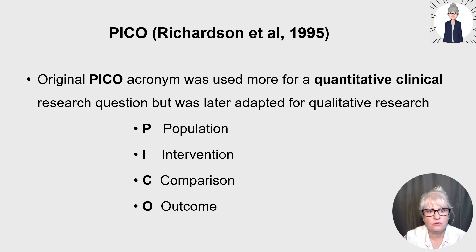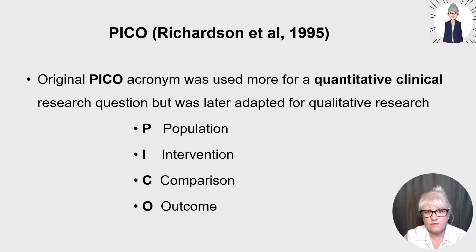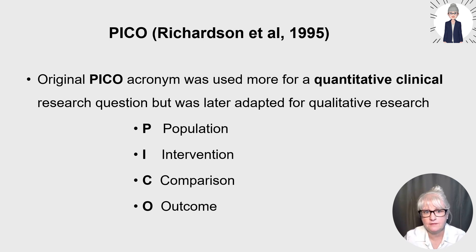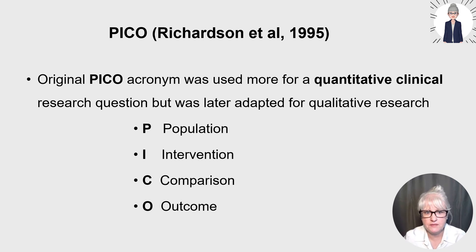P for population types links to types of patients, potentially the patient's condition, key characteristics, their age, gender or ethnicity. I for intervention — here we're thinking about what intervention, exposure or test are you doing; did the patients receive medication, radiation, surgery or counselling? C for comparison — is there a control group who receive no additional treatment, or a placebo group, so that you can compare between groups and participants?